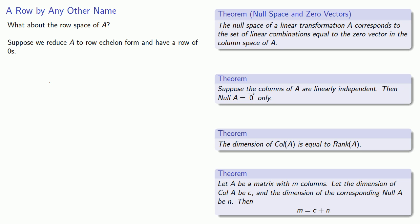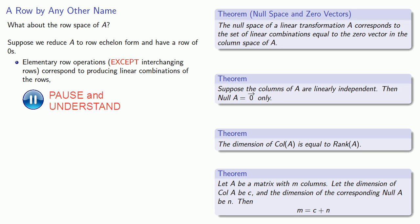Elementary row operations with the exception of interchanging rows correspond to producing linear combinations of the rows. So a row of zeros corresponds to expressing the zero vector as some linear combination of the preceding rows. And so by a similar set of arguments we have the following theorem.